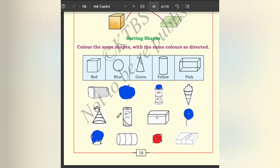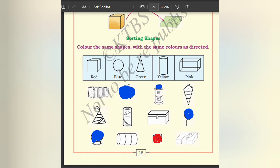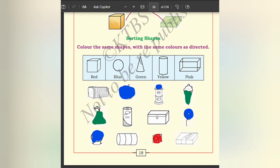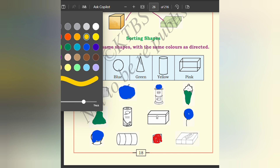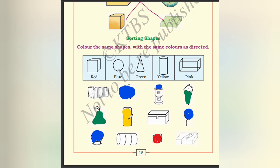The circles have been colored blue. Next, the triangle is colored green. Here, which are the triangles? This one is a triangle — it has been colored green. This one also colored green. Yellow is for the cylinder — this cylinder is colored yellow, and here also this cylinder is colored yellow.